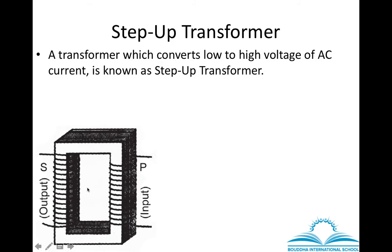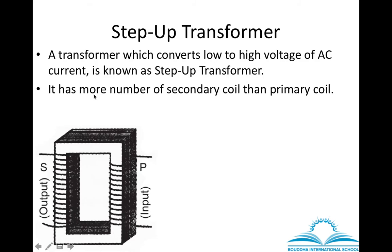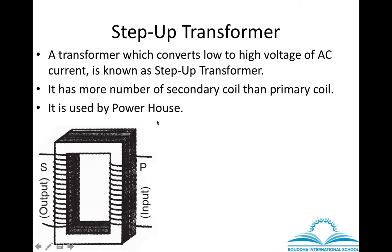A step-up transformer has more number of secondary coil turns than primary coil turns. It is used by powerhouses because the current produced must be sent over long distances, and to transmit over long distances the current must be at high voltage. So in the powerhouse, the current is first converted to high voltage using a step-up transformer and then sent to different cities via high voltage cables.